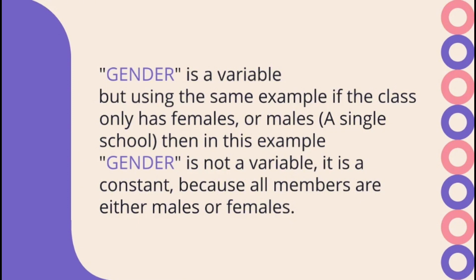Why? Because all members are either males or females. Let's use another example: if all members in a setting are married, then marital status is not a variable. But if in the same setting you have some who are single and some who are divorced, then marital status is a variable because it assumes different values. So a variable must be observable, vary, and be measurable. If all members are identical, the class is a constant.